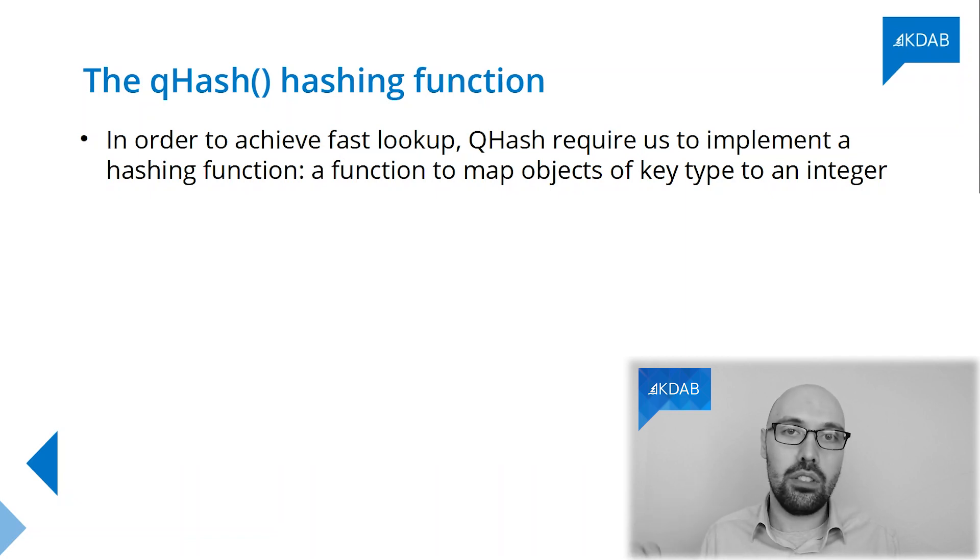However, qhash must also satisfy a little contract, and the contract is quite simple. The qhash function must be a function in the mathematical sense — inputs which compare equal must also result in identical outputs from qhash. So if you have two objects and according to your custom comparison those two objects are actually equal, then whatever qhash returns must be exactly the same for both objects.